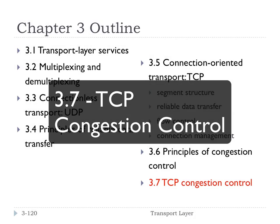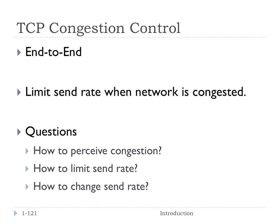This is section 3.7 where we're going to talk about how TCP implements congestion control. We're going to organize this discussion in terms of three questions. The first question is how does TCP perceive congestion? The second is how does TCP limit the send rate? And thirdly, how specifically should TCP change? We're going to talk about TCP's algorithms: additive increase, multiplicative decrease — AIMD — as the basic way to change the rate in response to congestion.